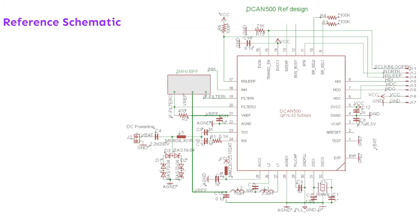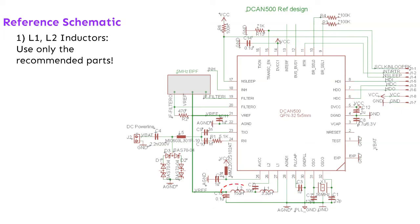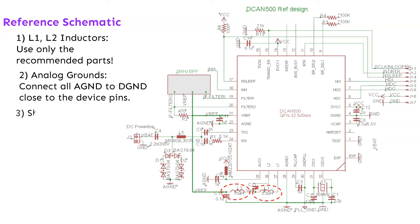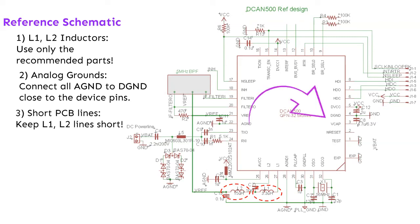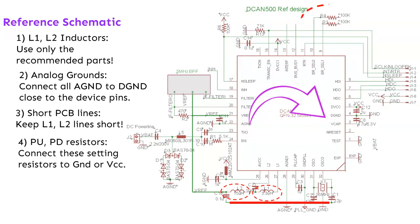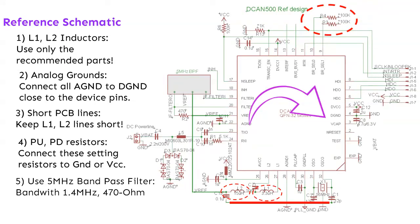Pay attention to the following: 1) L1 and L2 inductors — use only the recommended parts. 2) Analog grounds — connect all analog GND to digital GND close to the device pins. 3) Short PCB lines — keep L1 and L2 lines to the device short. 4) Connect pull-up and pull-down resistors to GND or VCC. 5) Use a 5 MHz band-pass filter with bandwidth 1.4 MHz and 470 Ohm.